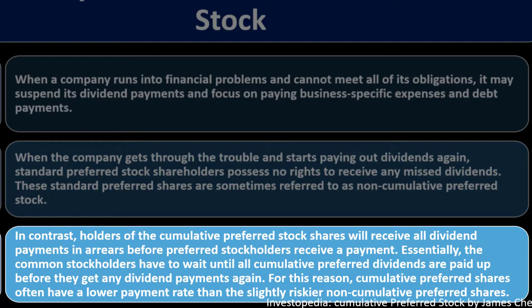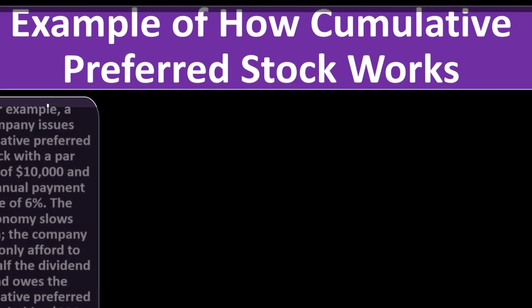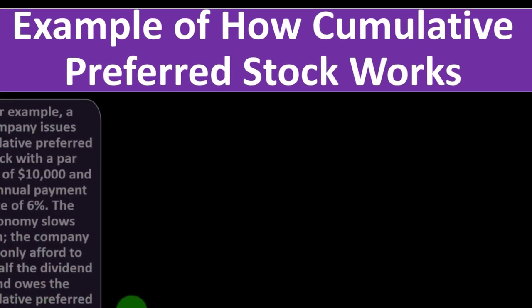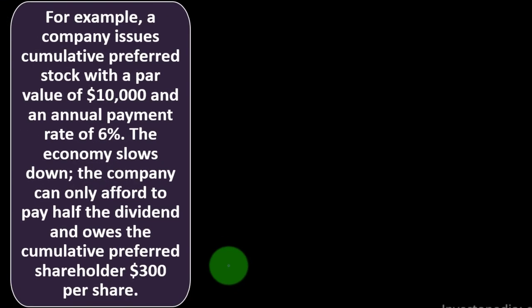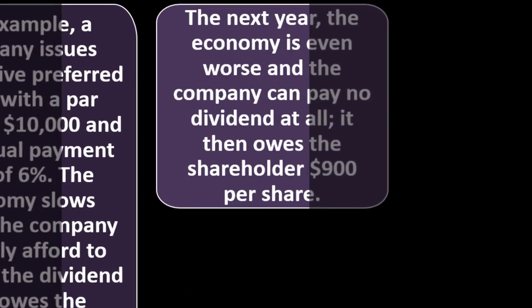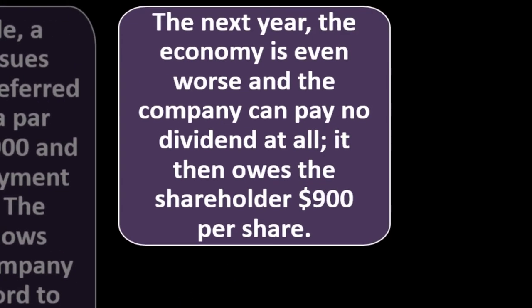For example, a company issues cumulative preferred stock with a par value of $10,000 and an annual payment rate of 6%. The economy slows down, and the company can only afford to pay half the dividend, owing the cumulative preferred shareholder $300 per share. The next year, the economy is even worse and the company can pay no dividends at all, owing the shareholder $900 per share.